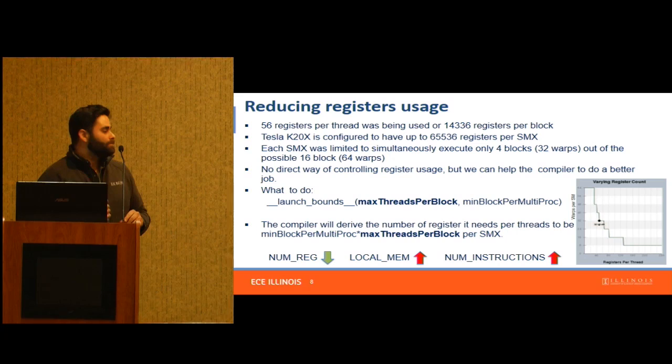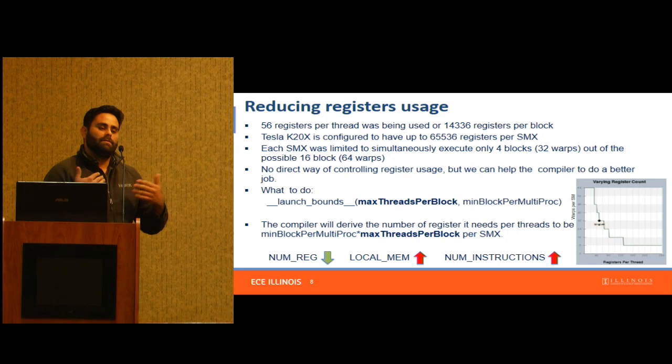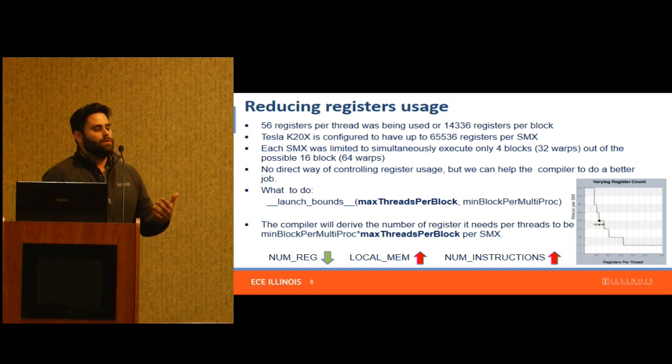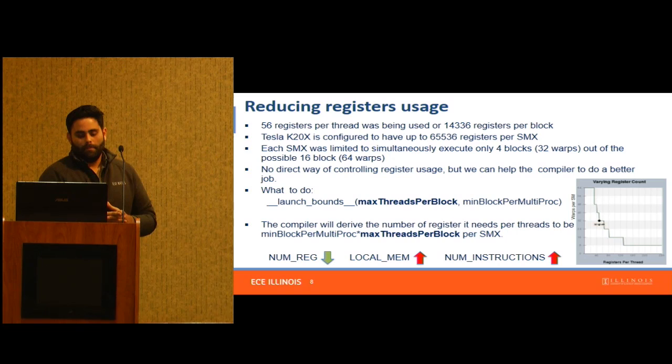This is the launch_bounds qualifier. It takes two parameters: max threads per block and min blocks per multiprocessor. The second parameter is optional — I usually leave it as one. What you do with max threads per block is, if you're launching 256 threads, you essentially lie to the compiler and say you're actually going to use double. The compiler then accounts for double the number of threads, spreading the registers appropriately — so you use fewer registers per thread.